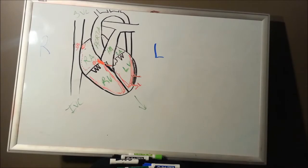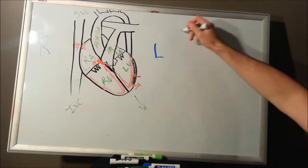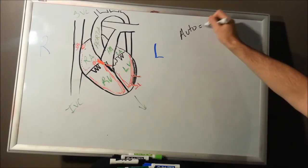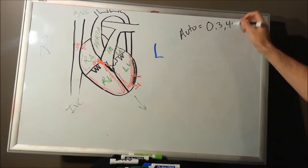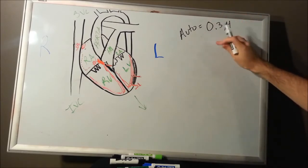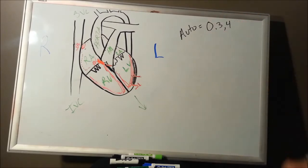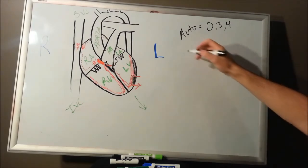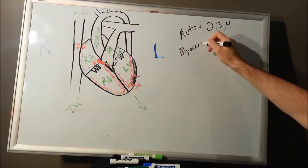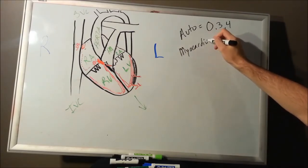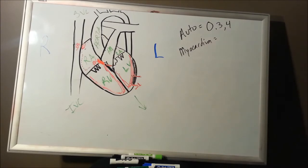As explained, the automaticity cells had phase 0, 3, and 4. Phase 0 is depolarization, phase 3 is repolarization, and phase 4 is your resting potential. The rest of your heart — the myocardium — is going to behave a different way.